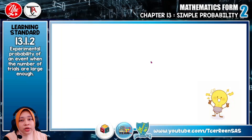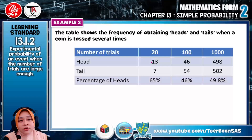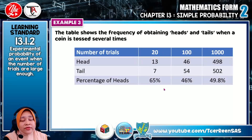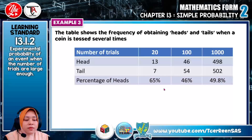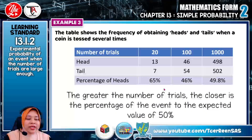We go further to 13.1.2, which is experimental probability of an event when the number of trials are large enough. When the number of trials is large enough, the value of the experimental probability approaches the theoretical probability. For example, the table shows the frequency of obtaining heads and tails when a coin is tossed several times. Since there are two possible outcomes when a coin is tossed, namely head and tail, there is a 50% chance of obtaining a head and tail. Based on the table, the greater the number of trials, the closer is the percentage of the event to the expected value of 50%.